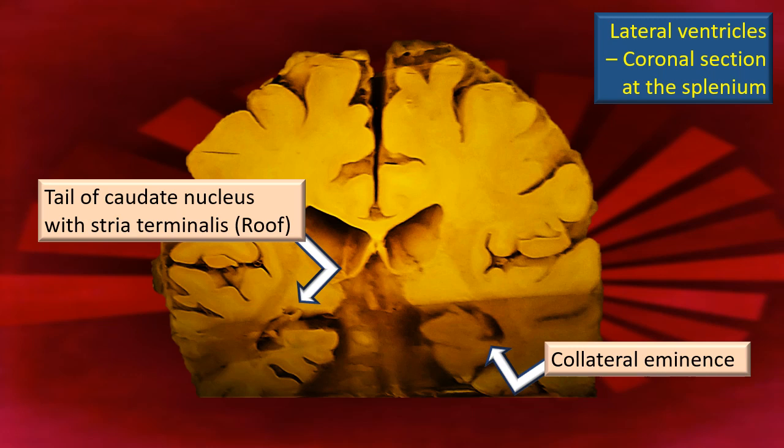Therefore, mainly the hippocampus and the collateral eminence are the two components of the floor. For the inferior horn, we usually describe roof and floor — although in cross-section this cavity looks triangular.